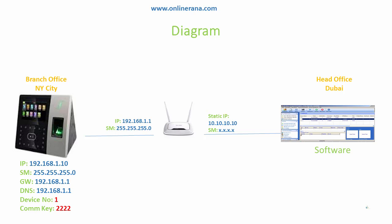We'll keep referring back to this diagram as we proceed. The new machine is configured with our IP scheme assigned to the biometric machine. In the next video, I will set up the router to forward the specific port — port 4370 — which is the port used by this device.